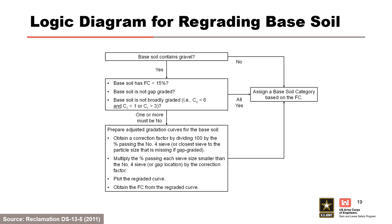If the maximum particle size is larger than 4.75 millimeters or the number 4 sieve, then you re-grade so that the maximum size is 4.75 millimeters. If the base soil is gap-graded, it must be re-graded on the closest sieve to the particle size that is missing.